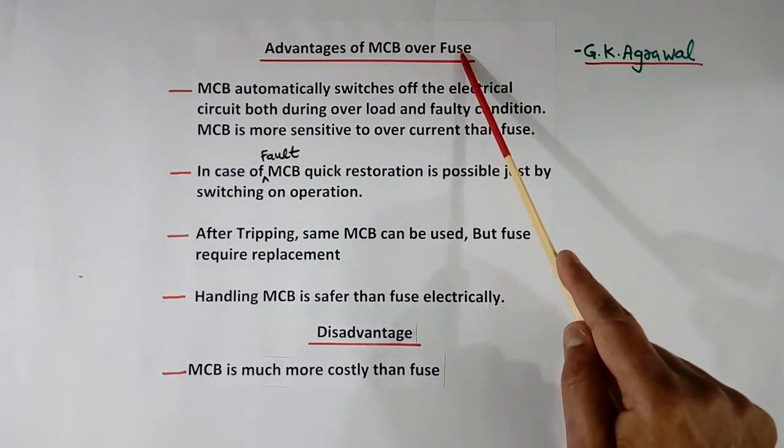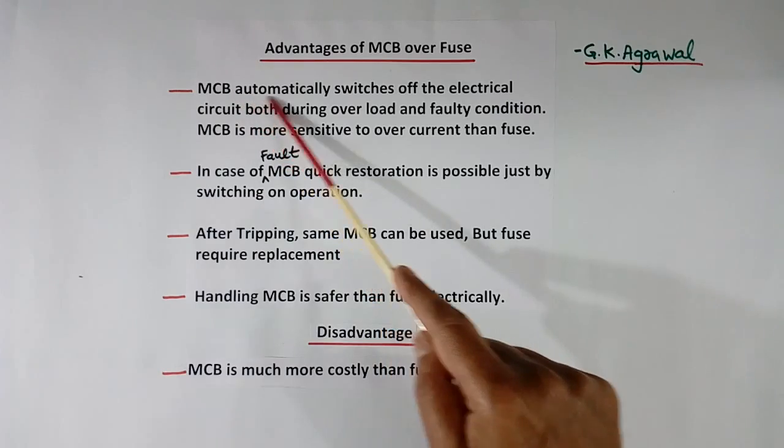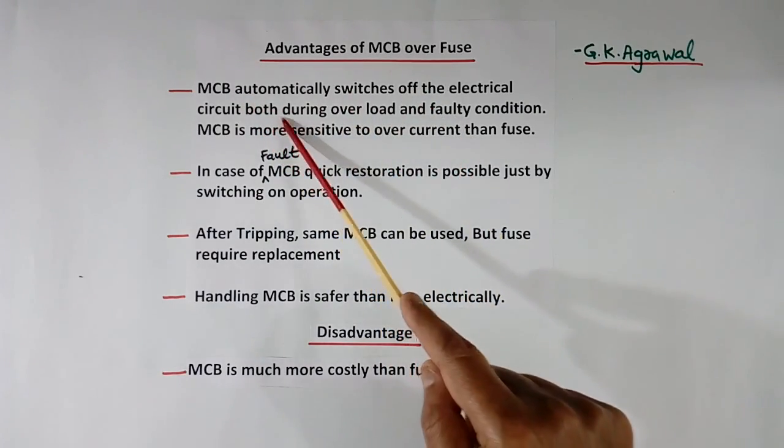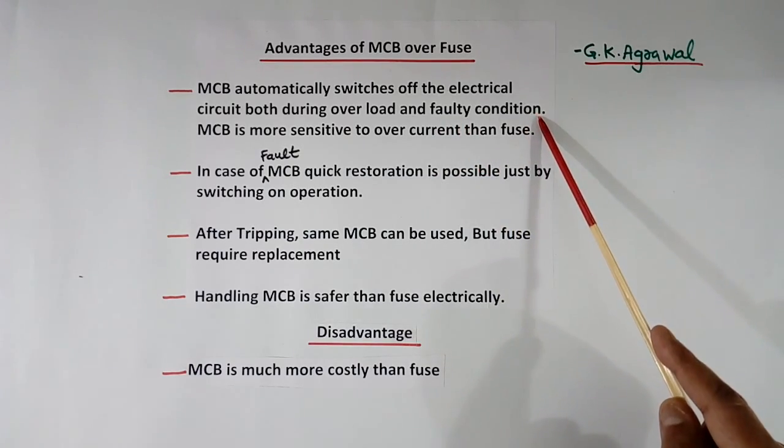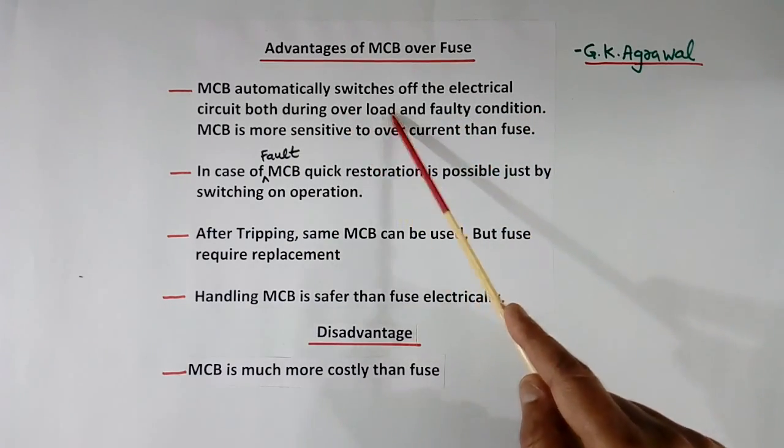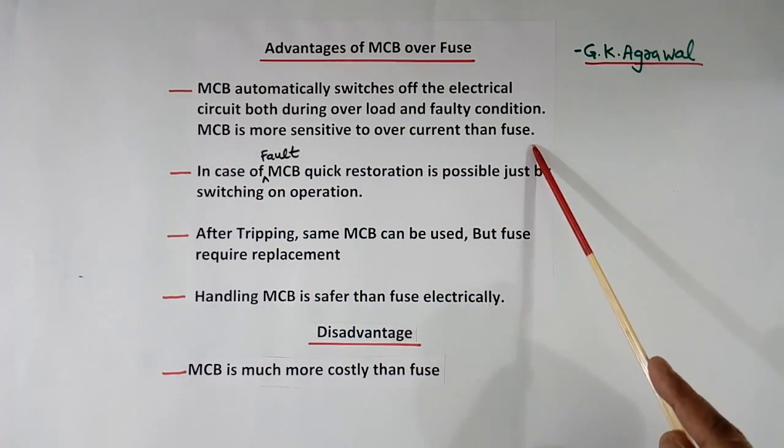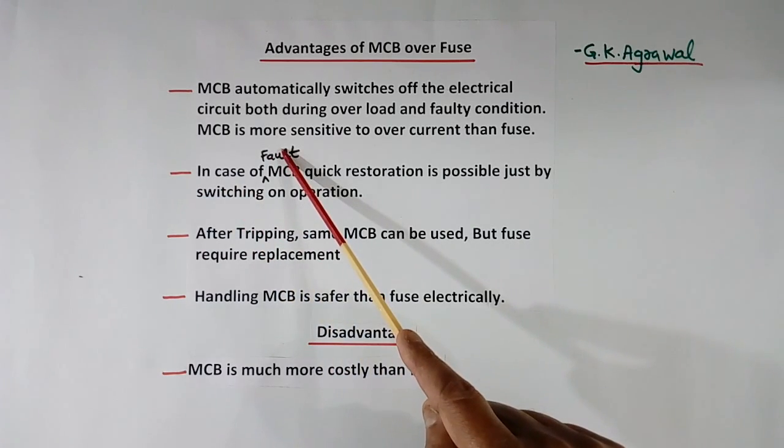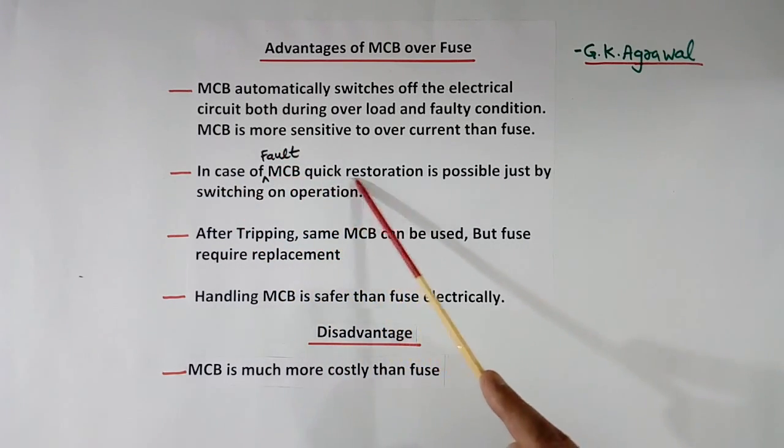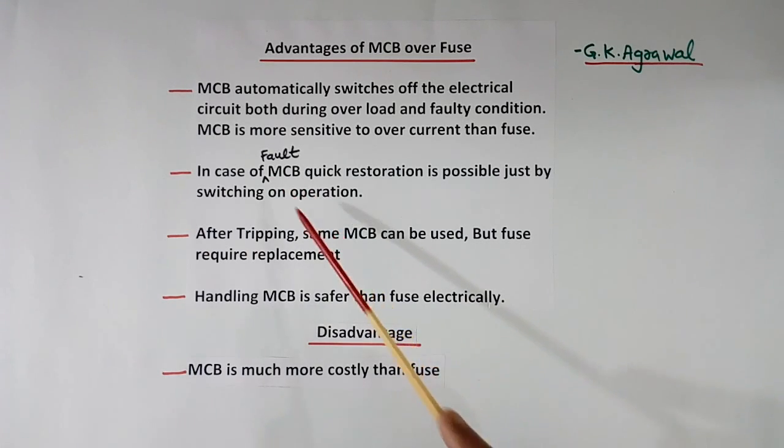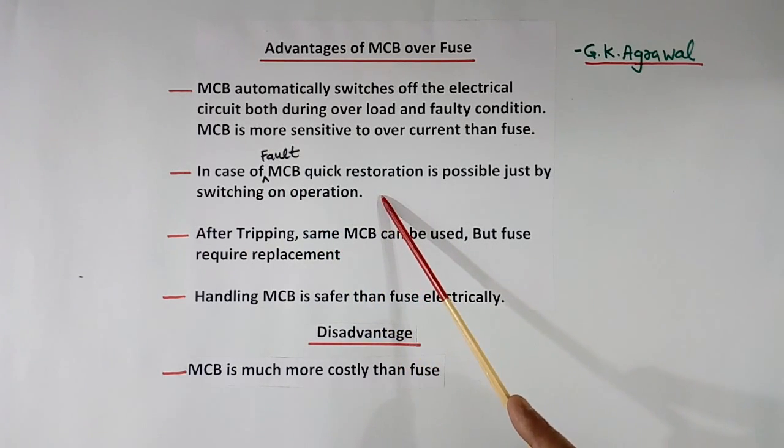Advantages of MCB over fuse: MCB automatically switches off during overload and faulty conditions. Whether it is short circuit or overload, it will automatically switch off. MCB is more sensitive to over-current than fuse. Then in case of fault, MCB will trip, then you can restore quickly by just switching it on. In case of fuses, you will have to replace it. It will take time. Third is, after tripping, this and this are roughly the same. Same MCB can be used, but fuse requires replacement.